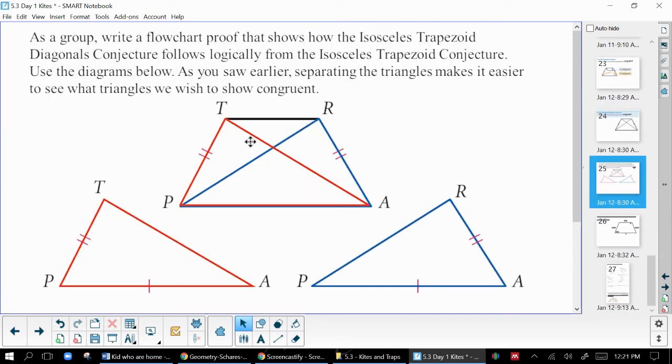Now, the reason this is true is because we could prove that there's two triangles are congruent. So in an isosceles trapezoid, we know we've got these two congruent sides, TP and RA. We know we have this shared side, PA and AP.